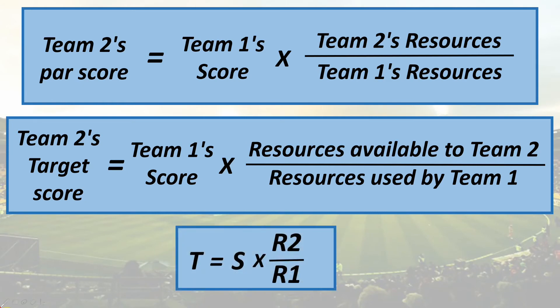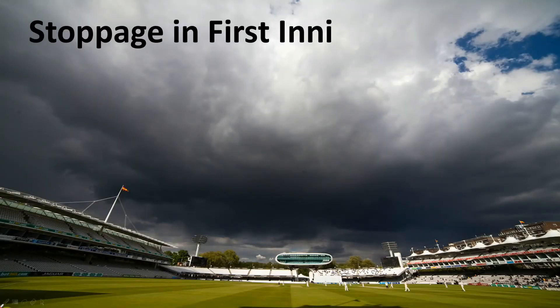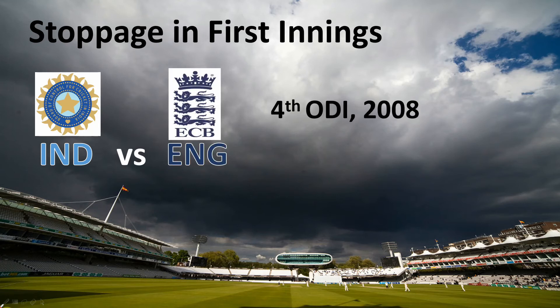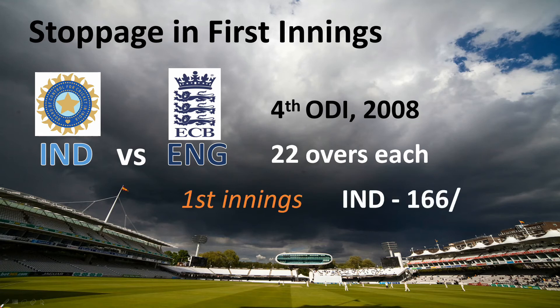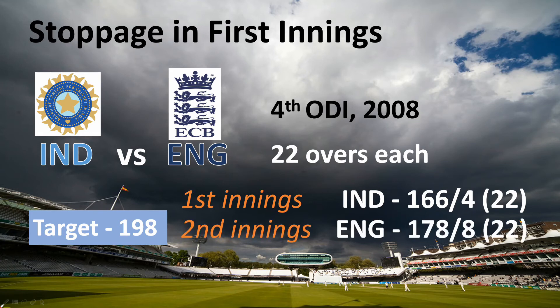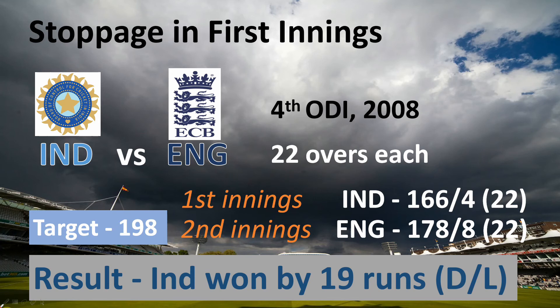In a match between India and England — the fourth ODI of the bilateral series in 2008 — rain interrupted play in the first innings and the match was reduced to 22 overs each. India scored 166 for 4, and the DL method set a revised target of 198 for England. In the second innings, England scored 178 for 8 in the 22 overs available — more than India's actual score — but still lost, and India won by 19 runs via the DL method.